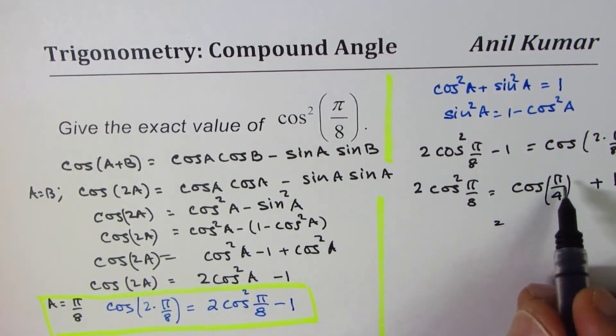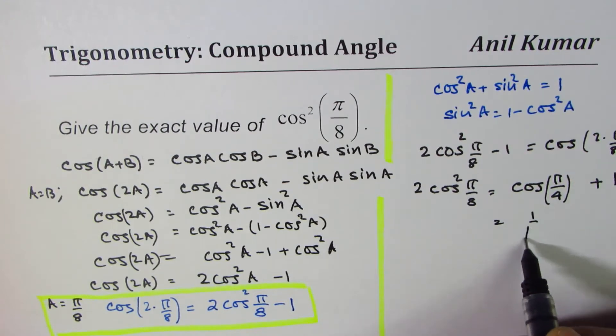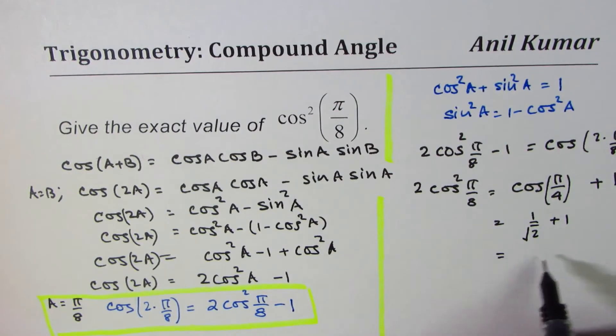We want to find the exact value of cos²(π/8), so we could write this as shown here. What is cos(π/4)? Cos(π/4) is 1 over √2, so that's what we get. You write this as 1 over √2 plus 1.